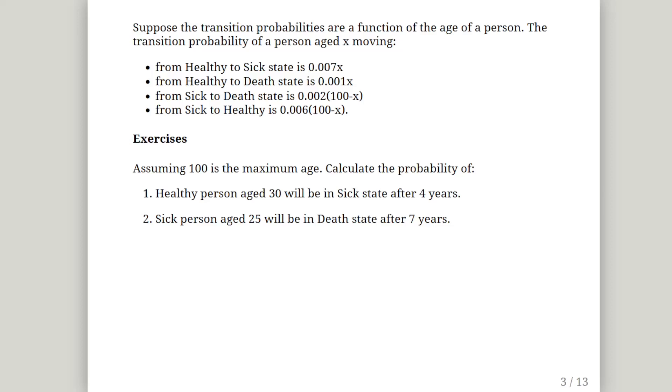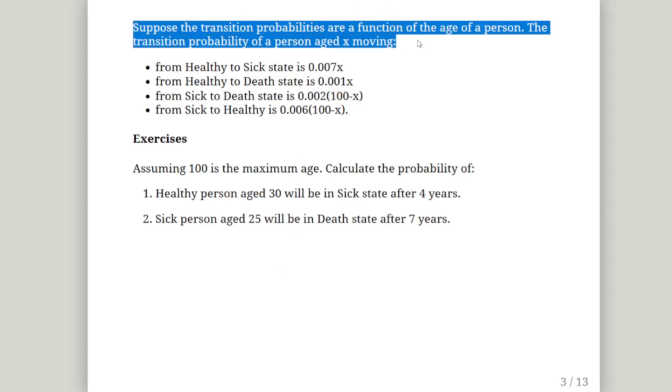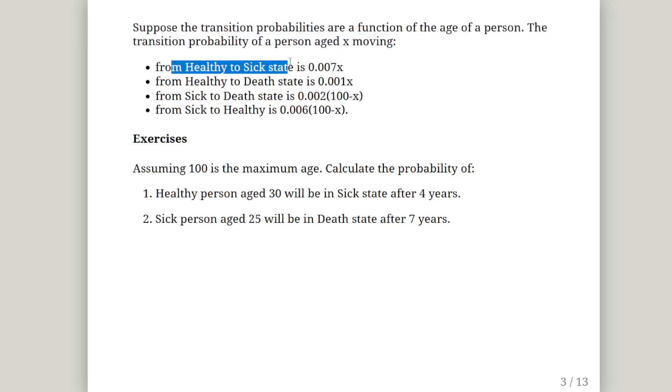So let's read the question. Suppose the transition probabilities are a function of the age of a person. The transition probability of a person aged x moving from healthy to sick - so we have three states: healthy, sick and dead.